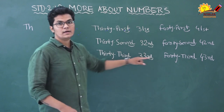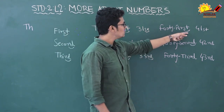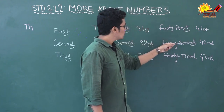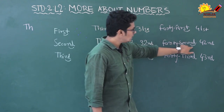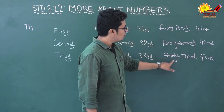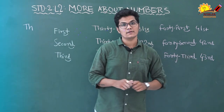This pattern applies even with higher tens — for example: thirty-first is 31st, thirty-second is 32nd, thirty-third is 33rd. Forty-first is 41st, forty-second is 42nd, forty-third is 43rd.